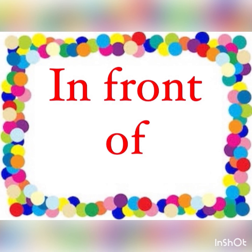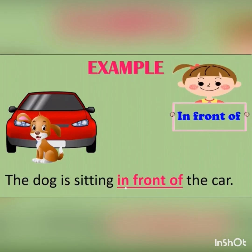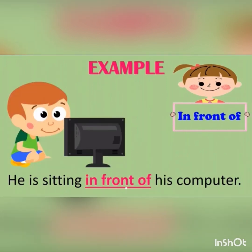In front of means saamne. Examples of 'in front of': The dog is sitting in front of the car — dog kaha baitha hai? Car ke saamne. So position word is 'in front of'. He is sitting in front of his computer — woh apne computer ke saamne baitha hai. So position word is 'in front of'.